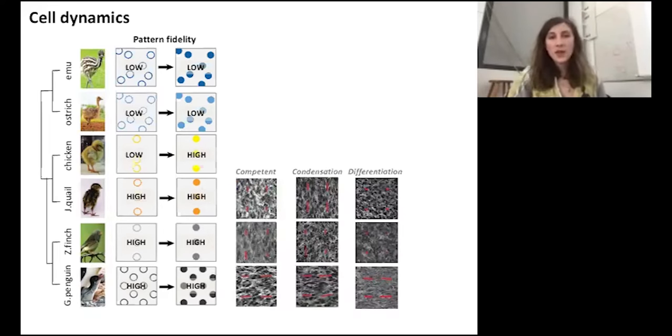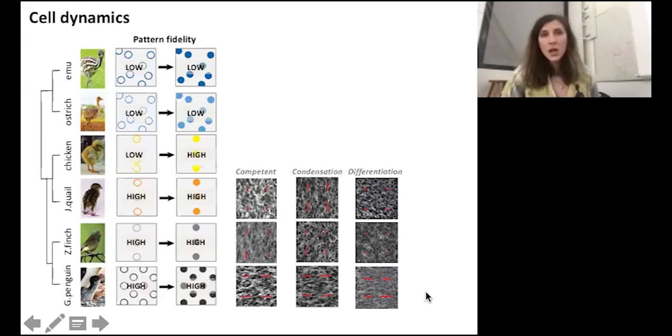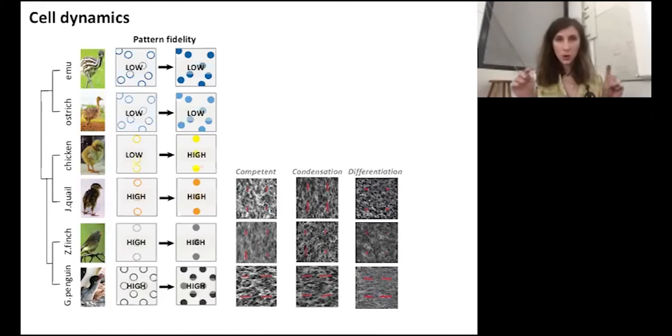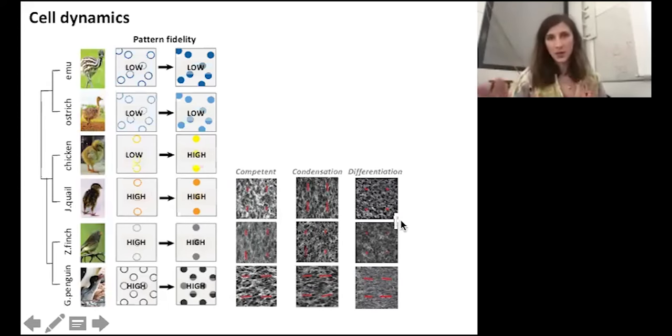We saw that in the dermis of the quail, finch, and penguin, high fidelity species, there is a high amplitude of dermal anisotropy before primordial emergence. It is maintained when they arise in the interprimordial space before dropping upon differentiation in quail and finch while it is maintained in the penguin. In penguin, the orientation of the cell anisotropy is along the dorsal ventral axis, and in finch and quail, it's oriented along the anterior posterior axis.